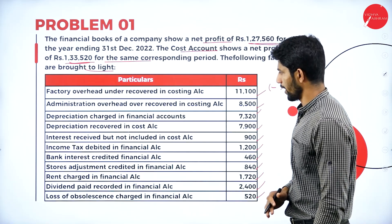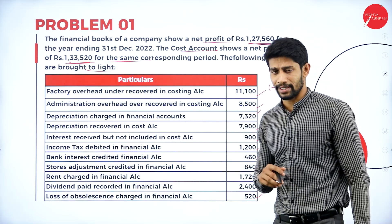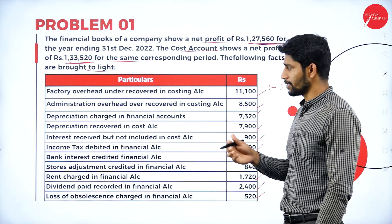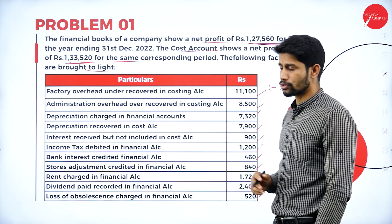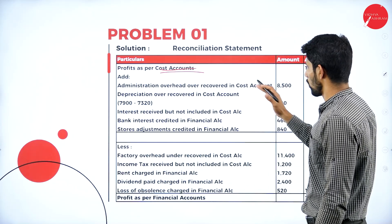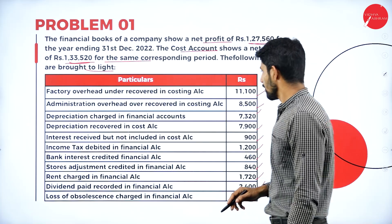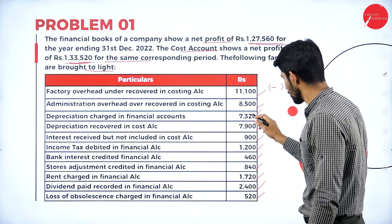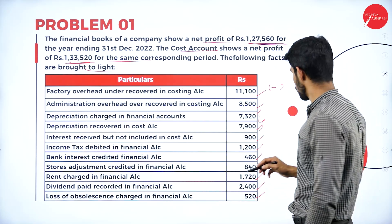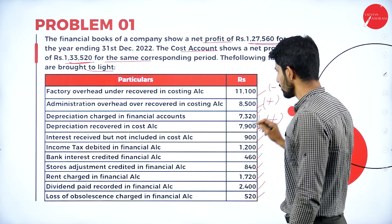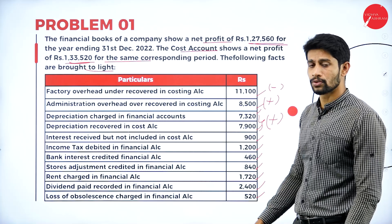For administration overhead over-recovered in cost account: over-recovered means expenses were collected more than what was actually supposed to be collected — for example, Rs. 8,500 was collected in excess. So we are supposed to add it. Next, depreciation charged in financial accounts is Rs. 7,320 and depreciation recovered in cost account is Rs. 7,900. The difference amount of Rs. 580 is to be added to the cost profit.